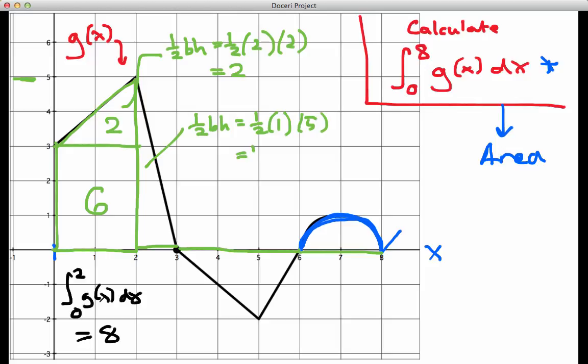So that area is five over two. And again, in the language of an integral, we would say that the integral just from two to three of g of x dx would equal that exact area, which is 5 halves.